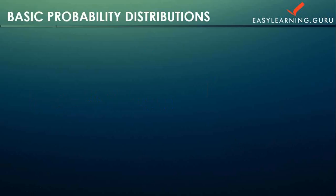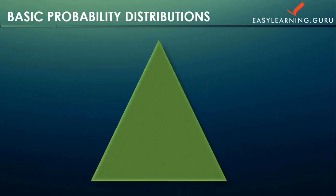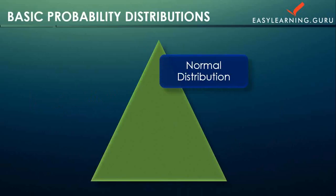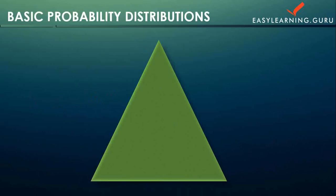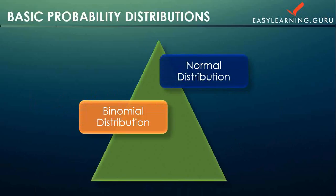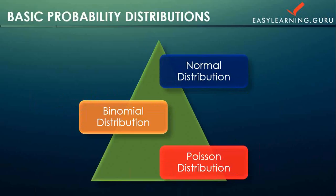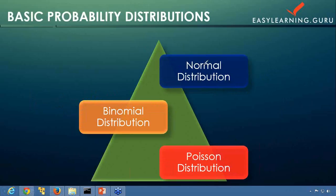Now let's move over to some basic probability distributions that we'll be covering in this course. We'll be covering three basic probability distributions: the first one is normal distribution, the second is binomial distribution, and the third is Poisson distribution. We'll be seeing each of these in detail when we cover them individually.